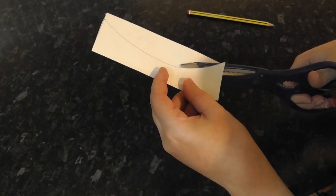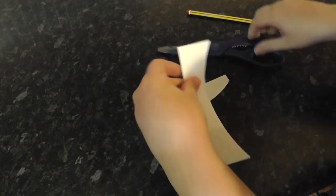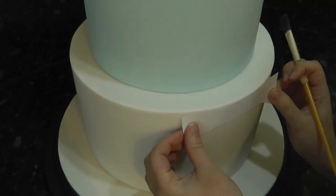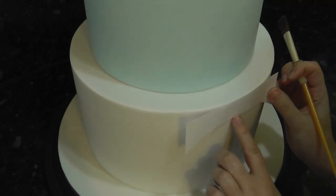Now cut out your template. Dampen all the top edge of the bottom tier and a small band no deeper than the smallest part of your template around the sides.